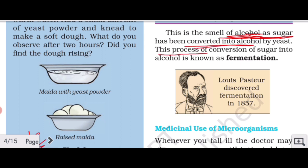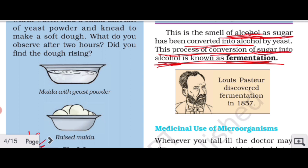This process of conversion of sugar into alcohol is known as fermentation. Louis Pasteur discovered fermentation in 1857. This is an important fact — exam questions may ask who discovered fermentation or when it was discovered.